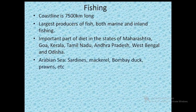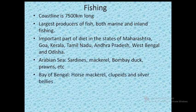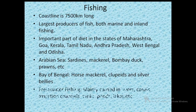In the Arabian Sea, we find sardines, mackerel, Bombay Duck and prawns. Whereas in the Bay of Bengal, we find fishes like horse mackerel, clupeids and silver bellies.